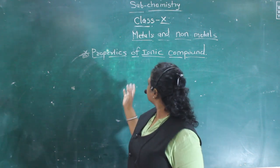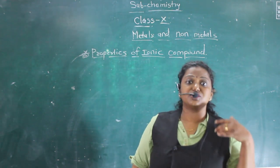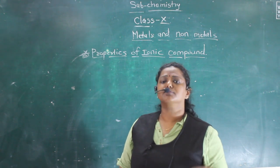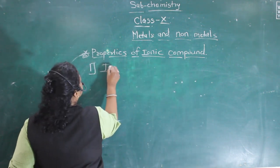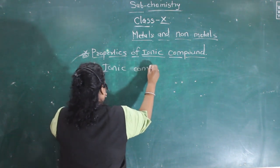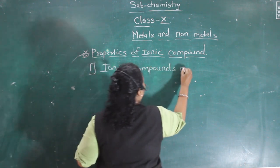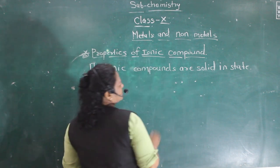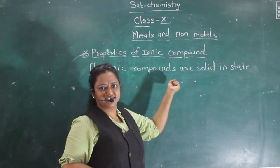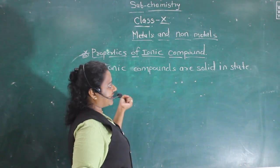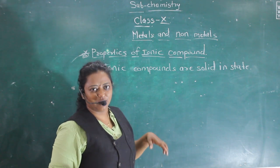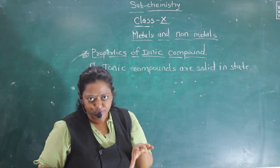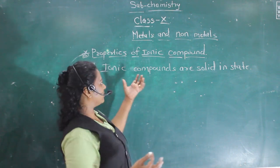The first property of ionic compounds is that ionic compounds are mostly in the solid state. So, the first property is: ionic compounds are solid in state. They have high density because positive cations and negative anions combine together and hold each other in a solid shape.